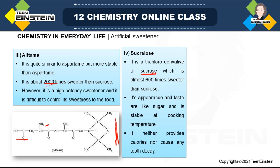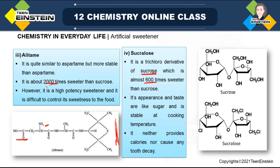The fourth molecule is sucralose. The name is basically derived from sucrose because it is actually a trichloro derivative of sucrose — three OH groups are replaced by chloride. It is 600 times sweeter than sucrose. Its appearance and taste are just like sugar. It is stable at cooking temperature, unlike aspartame. It neither provides calories nor causes any tooth decay. The structural difference from sucrose is only those three OH groups replaced by Cl.